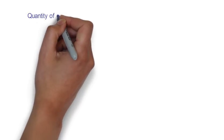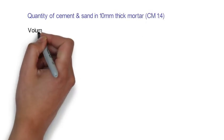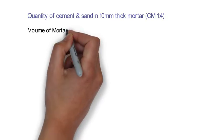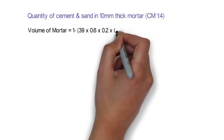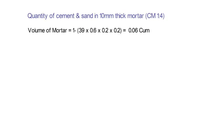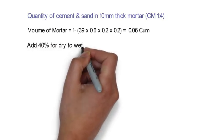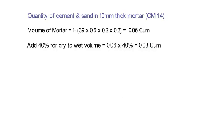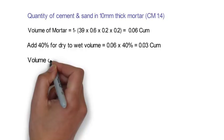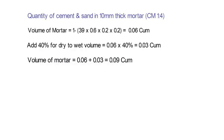Now we have to calculate the quantity of cement and sand in 10mm thick mortar. The volume of mortar formula is 1 minus (39 x 0.6 x 0.2 x 0.2) is equal to 0.06 cubic meter. Now we add 40% for dry to wet volume conversion: 0.06 x 40% is equal to 0.03 cubic meter. So the total volume of mortar shall be 0.06 plus 0.03 is equal to 0.09 cubic meter.